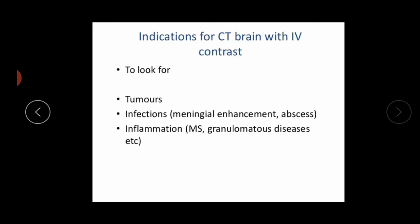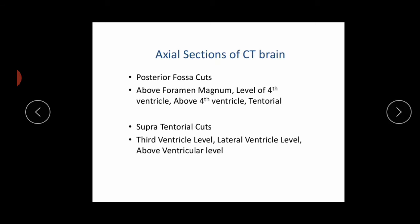Indications for CT brain with IV contrast include: tumors, infection such as meningeal enhancement, abscesses, and inflammation. The standard sections of CT brain cover the posterior fossa cuts, above the foramen magnum, level of the fourth ventricle, and above the fourth ventricle.